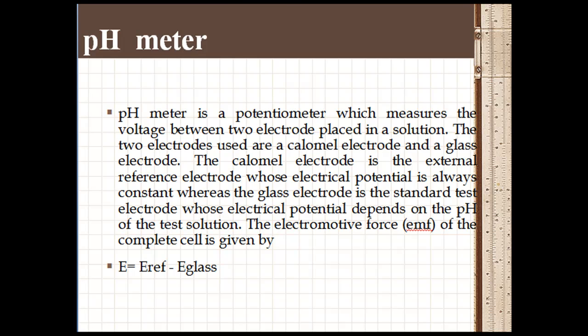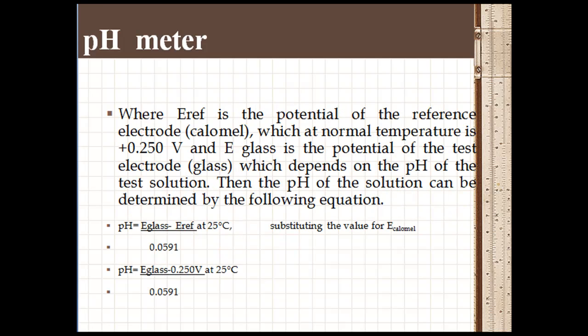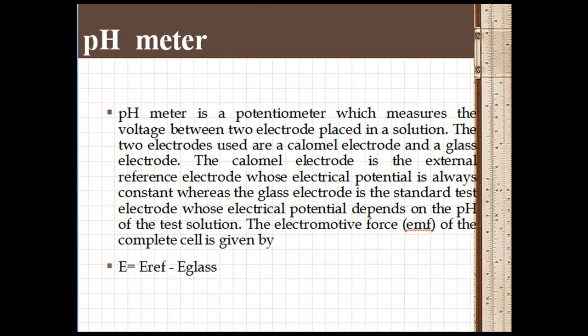A pH meter is a potentiometer which measures the voltage between two electrodes placed in the solution. The two electrodes used are a calomel electrode and a glass electrode. The calomel electrode is the external reference electrode whose electrical potential is always constant.